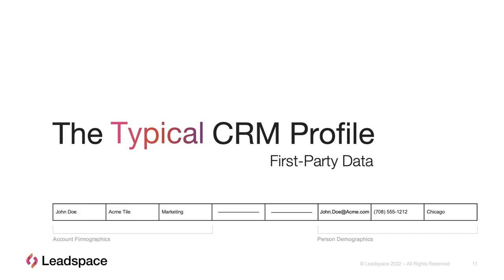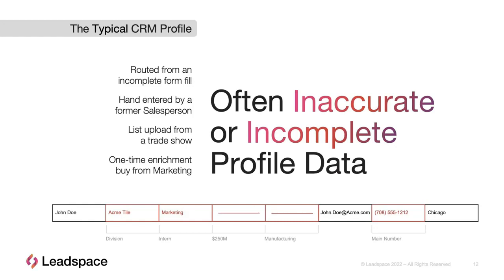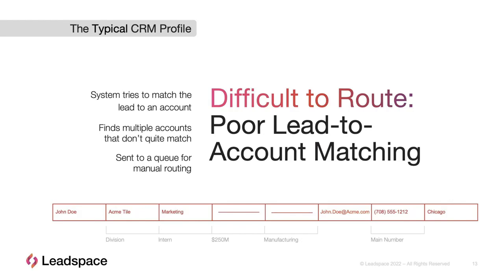Let's drill down into this concept of a B2B profile. For those working in sales and marketing or in a data role supporting those systems, your typical CRM profile starts with first-party data. Unfortunately, that first-party data is not always complete — you have empty fields, things that may or may not be right, and that really affects how you do any automation. If the data is hand-entered, you're at the whim of whoever put it in. They may or may not have validated it. You may be uploading information from trade shows, which can cause all kinds of problems.